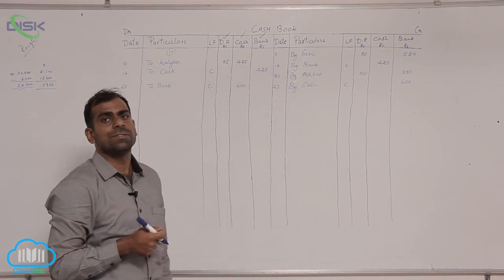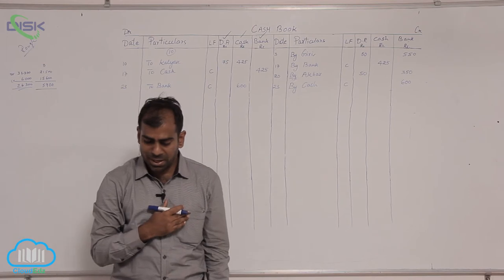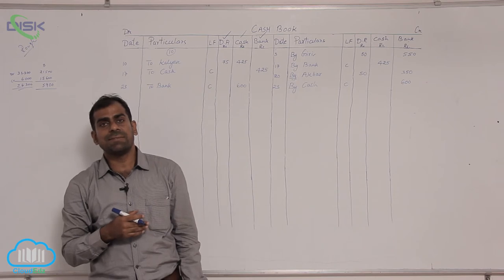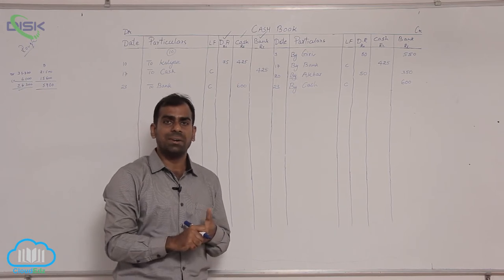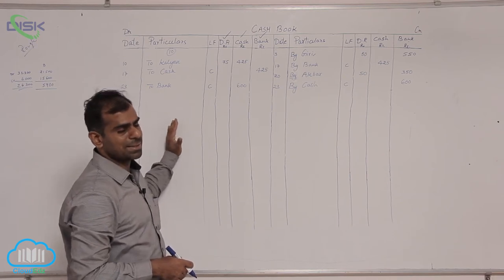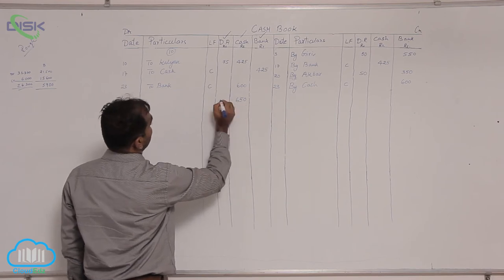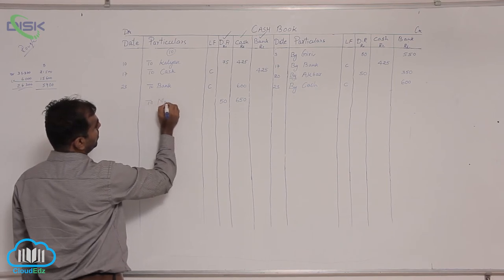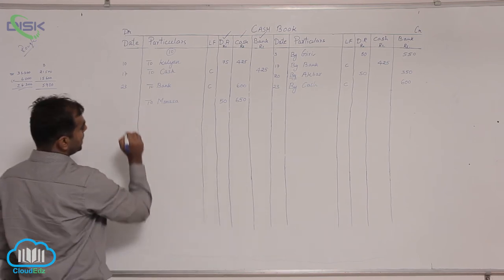The next transaction is on the 25th: received cash from Manasa 650, discount allowed 50. It is a receipt of cash, so we record it on the debit side. Enter 650 in the cash column and 50 rupees in the discount allowed column. The person's name Manasa goes in the particulars column because she is the giver. The transaction date is 25th.